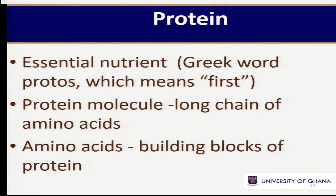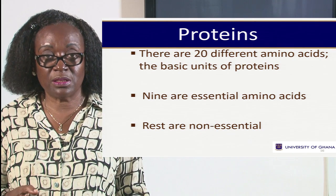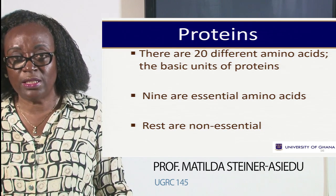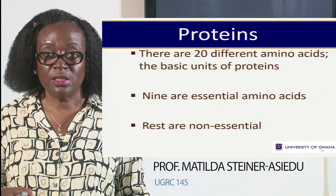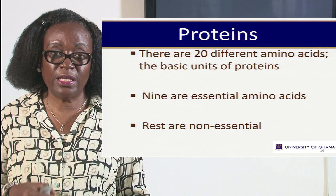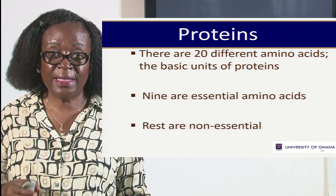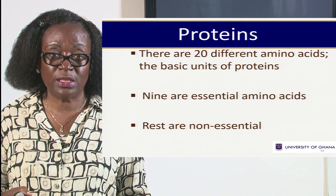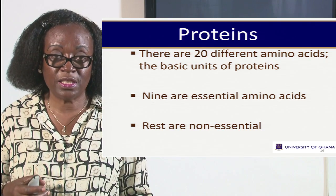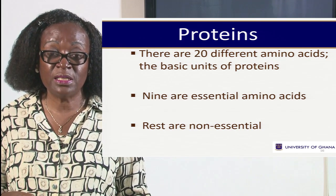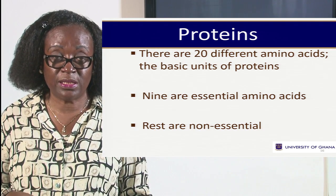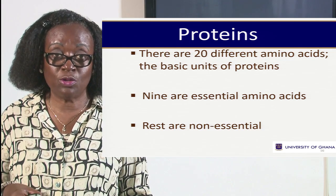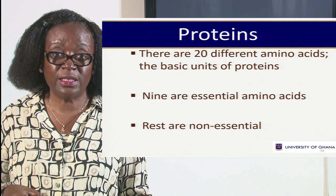They are essential for the body. They contain the amino acids, which are the building blocks for building our muscles. There are 20 different amino acids that come together to make proteins, and it is important for us to eat both plant and animal source foods to get the proteins. But there are nine of these amino acids which are essential — and when you talk of essentiality in nutrition, it means that it must be present in the diet because the body cannot make them. These are the nine essential amino acids.